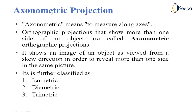Next is the axonometric projection. Axonometric means to measure along the axis. Axonometric projection shows more than one side of the object at a time. It shows an image where the object is viewed from a skew direction in order to reveal more than one side — at a time we can see two sides of the object.